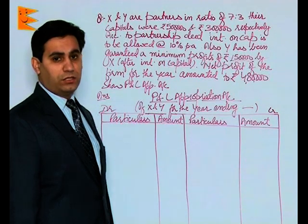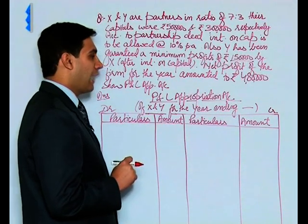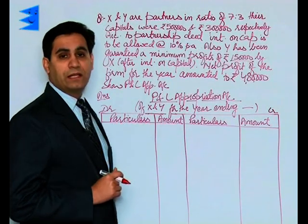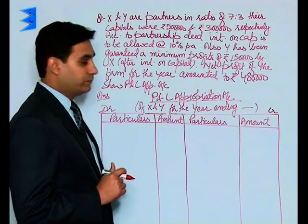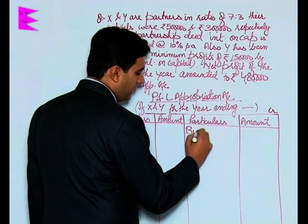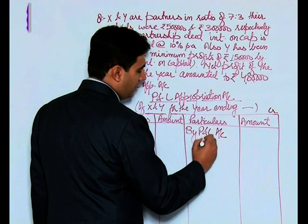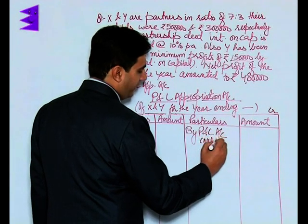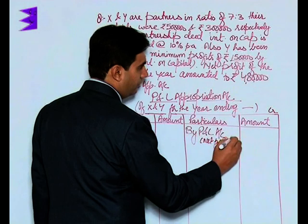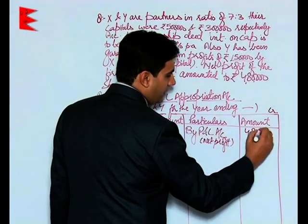Net profit of the firm for the year amounted to 4 lakh 80,000. We need to show the P&L appropriation account. Now students, the first entry would be by profit and loss account. This is net profit, and in this case it is given to be 4 lakh 80,000.